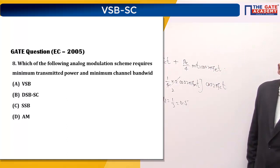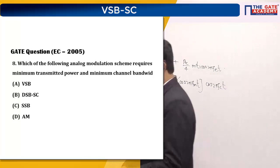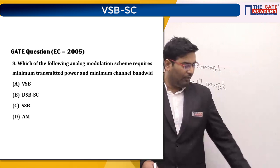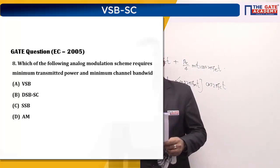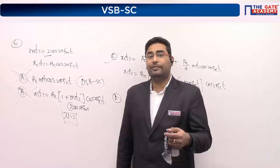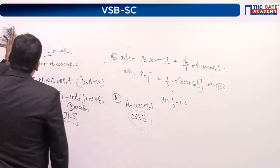Question 7 (straightforward): Which analog modulation scheme requires minimum transmitted power and minimum channel bandwidth? Minimum transmitted power and minimum bandwidth is SSB. VSB requires more than SSB but less than DSB. Answer is option C (SSB).